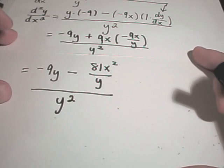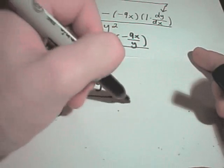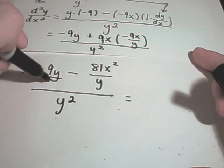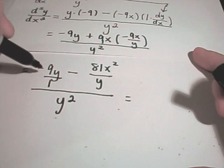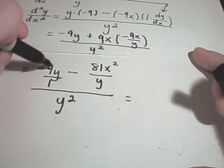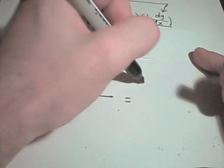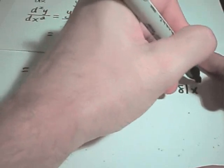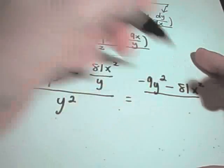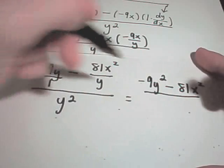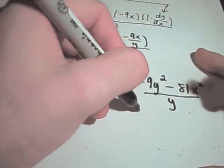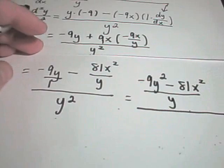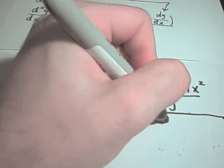Now, I guess there's a couple different ways you can simplify this. I'm going to get common denominators in the numerator. So negative 9y is negative 9y over 1. And again, if I multiply top and bottom by y, I'll get negative 9y squared minus 81x squared. And again, I'll now have my common denominator of y in the numerator. And this is all being divided by our original y squared that was in the bottom.